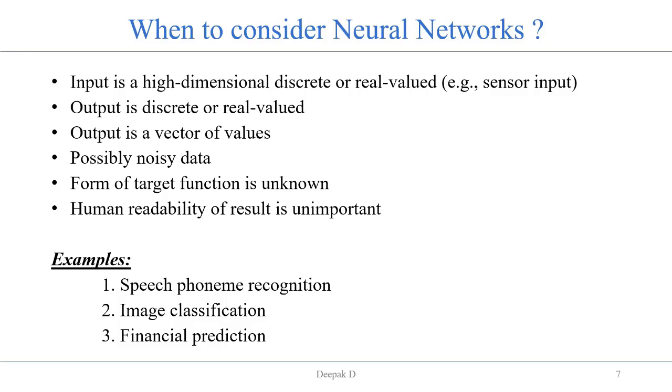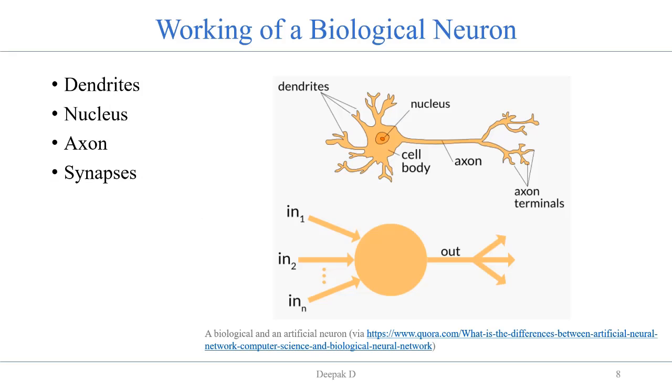Let's see the working of a biological neuron. Biological neurons, or simply we can call them neurons, are the fundamental units of the brain and the nervous system. These cells are responsible for receiving sensory input from the external world via dendrites which will be processed and gives the output through axons.